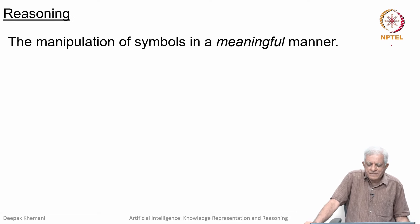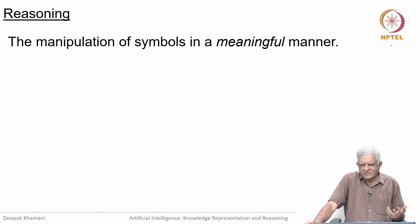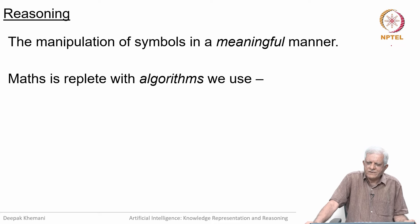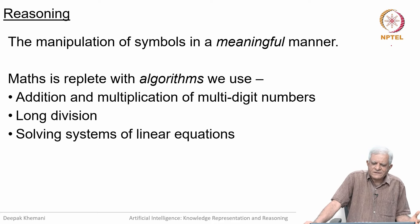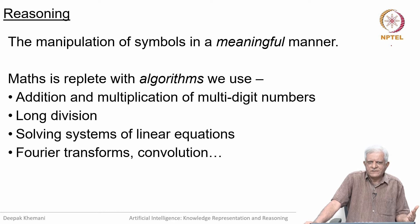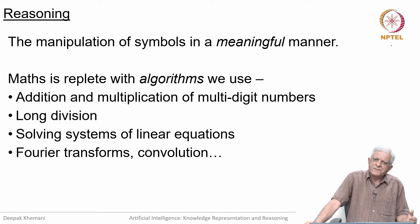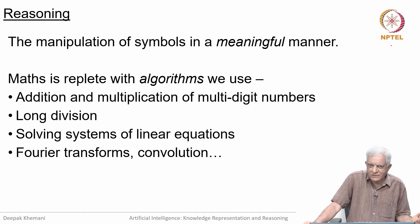What is reasoning? By reasoning, we mean the manipulation of symbols in a meaningful manner. You can write rules to manipulate symbols, but when we say reasoning, it should be done in a meaningful manner. Mathematics is replete with algorithms — these are reasoning algorithms, rules for manipulating symbols. Addition and multiplication — very early children learn to add three-digit numbers, they learn how to carry over. These are procedures or algorithms we use.